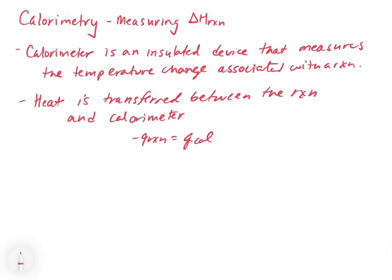A calorimeter is basically an insulated device that measures the temperature change associated with the reaction. We run the reaction inside the calorimeter, heat is transferred to or from the reaction, and that causes the calorimeter and its contents to change temperature. Then we can use our specific heat capacity and heat capacity equations to figure out how much energy was transferred.